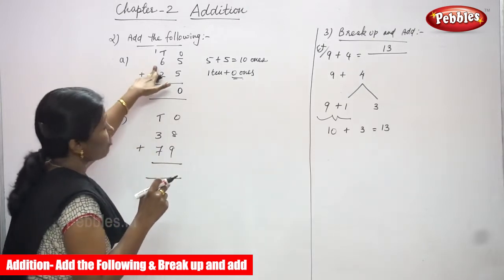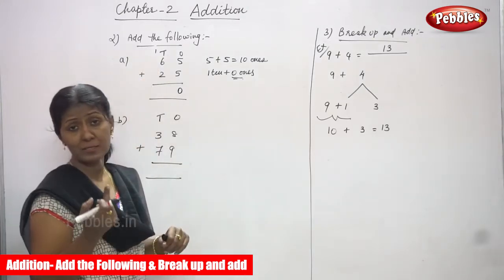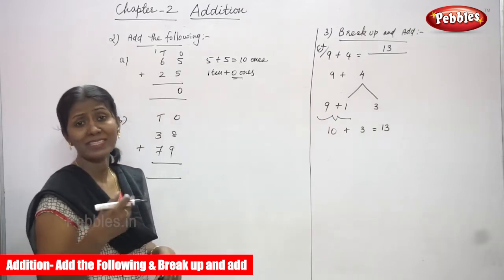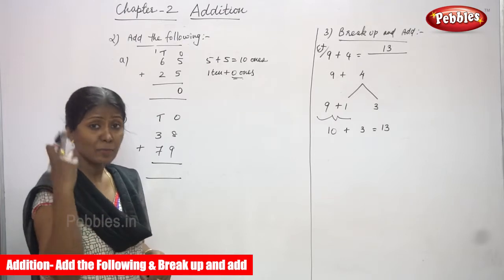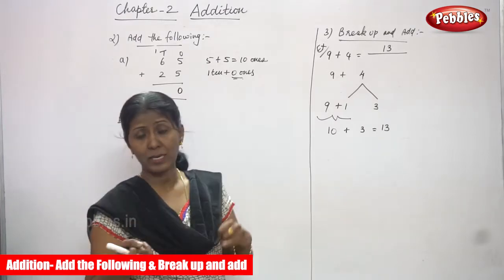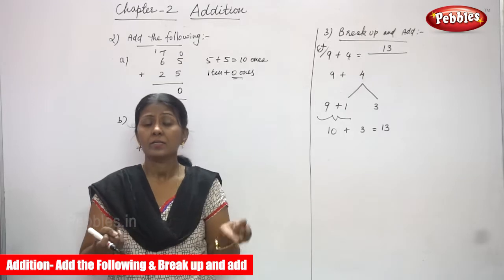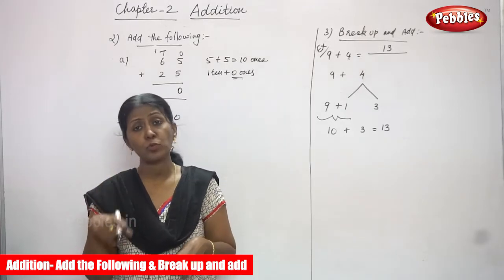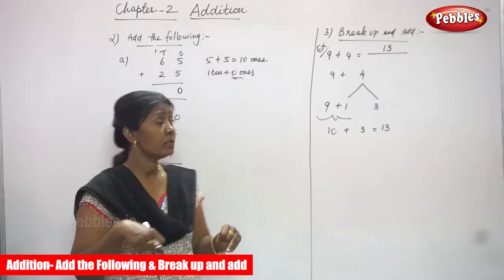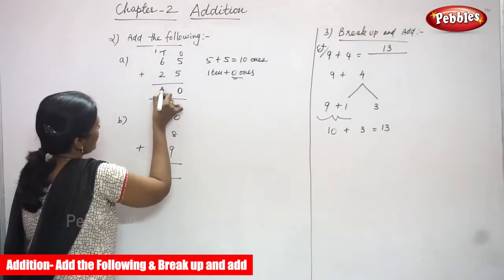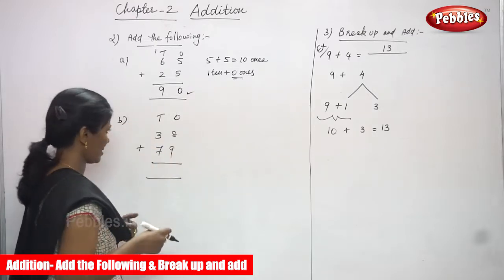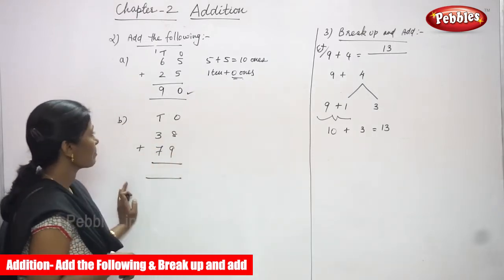Now six plus one — one in the mind and six in the finger, or six in the mind and one in the finger: after six, that is seven. Then seven in the mind and two in the finger: after seven, eight, nine. So I get nine. I put nine here, and the answer is 90.